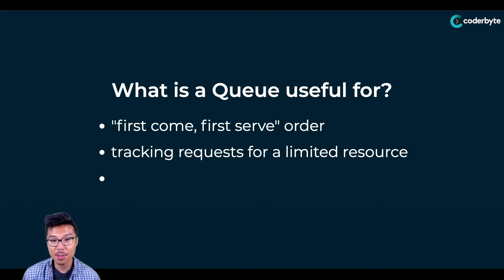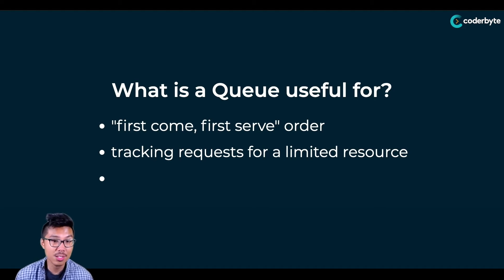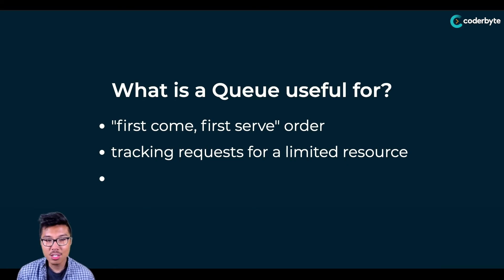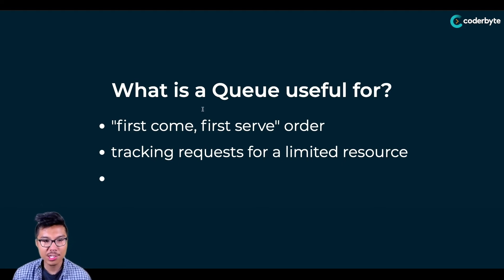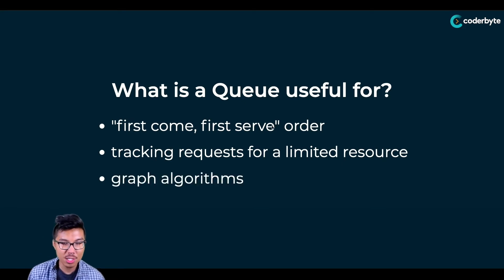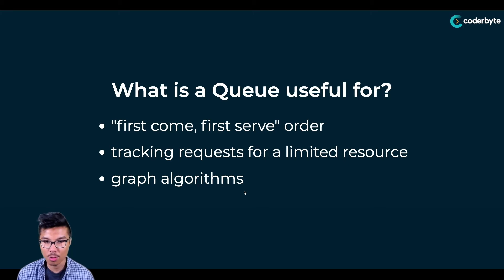For example, if my limited resource is cashiers, I can use a queue to track the people standing in line for an open cashier. Or if my limited resource is the office printer, I can use a queue to track jobs so they're fulfilled in order — the first job that comes in is also served first. In a more algorithmic sense, queues are also useful to implement graph algorithms, which we'll cover later in the course.